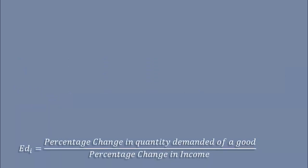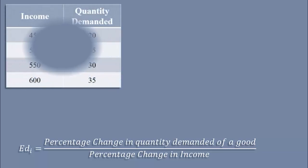It is calculated using the formula: percentage change in quantity demanded of a good divided by percentage change in income. Look at this table.